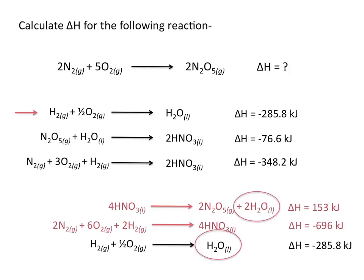We have 2 moles of H2O on the product side, and we need to modify this third equation to cancel those out. We'll need to flip this equation and multiply it by 2 in order to cancel out H2O by having it on both the reactant and product sides.